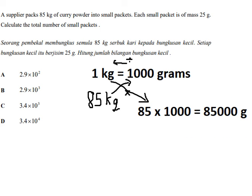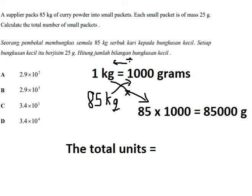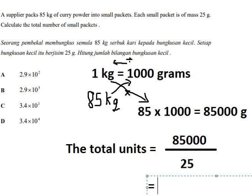So each small packet has 25 grams, so we can find the total units. That should be about 85,000 divided by 25. You will get the answer in here, that's about 3400 units.